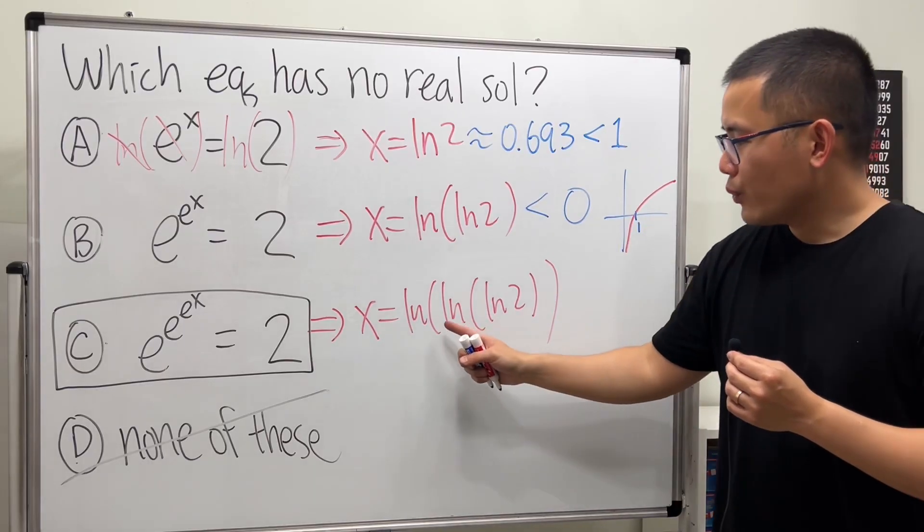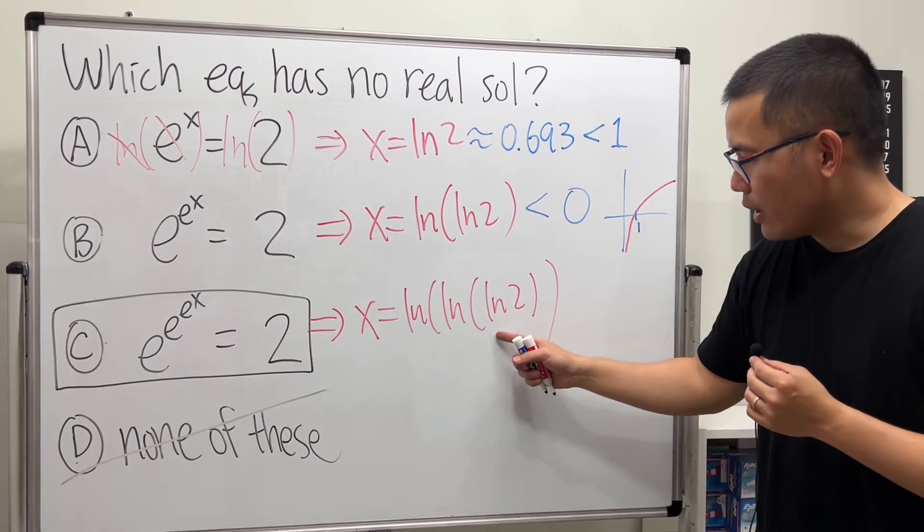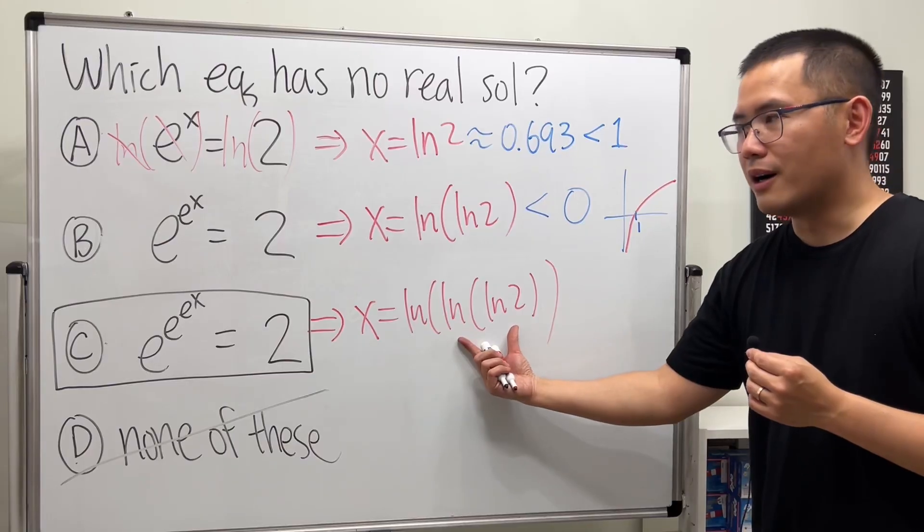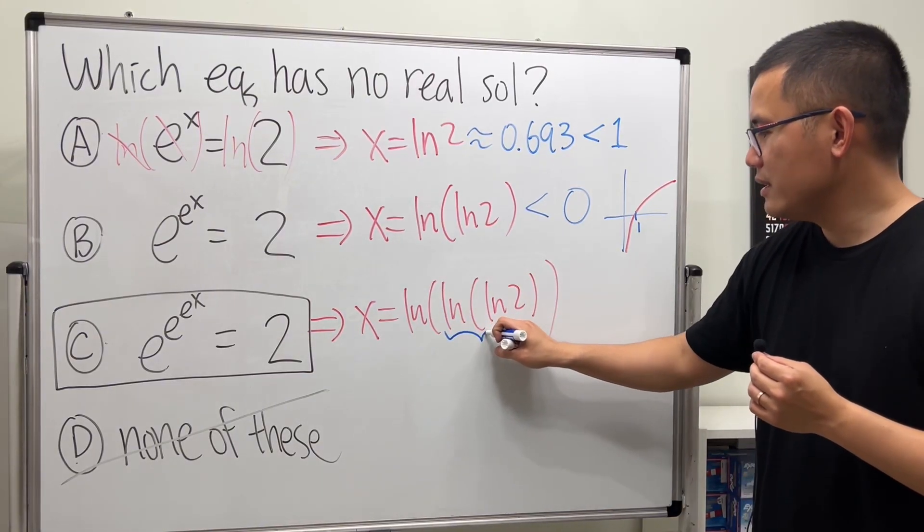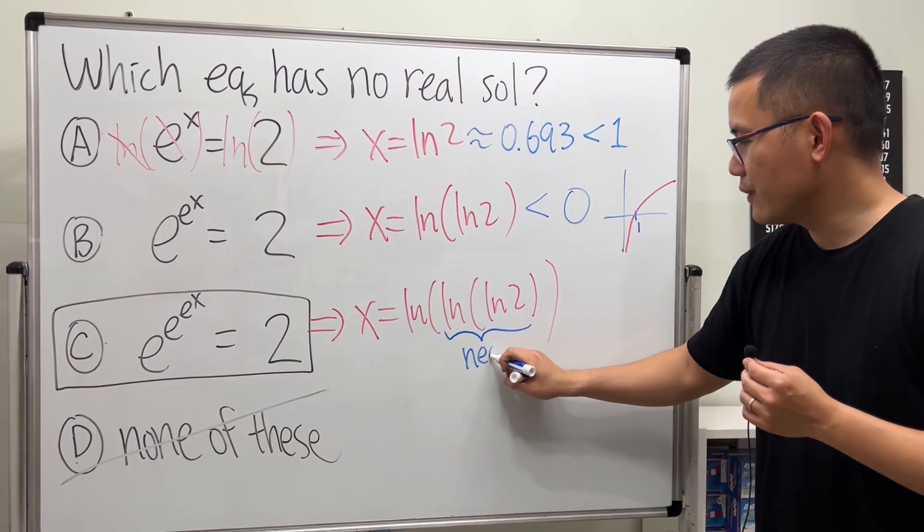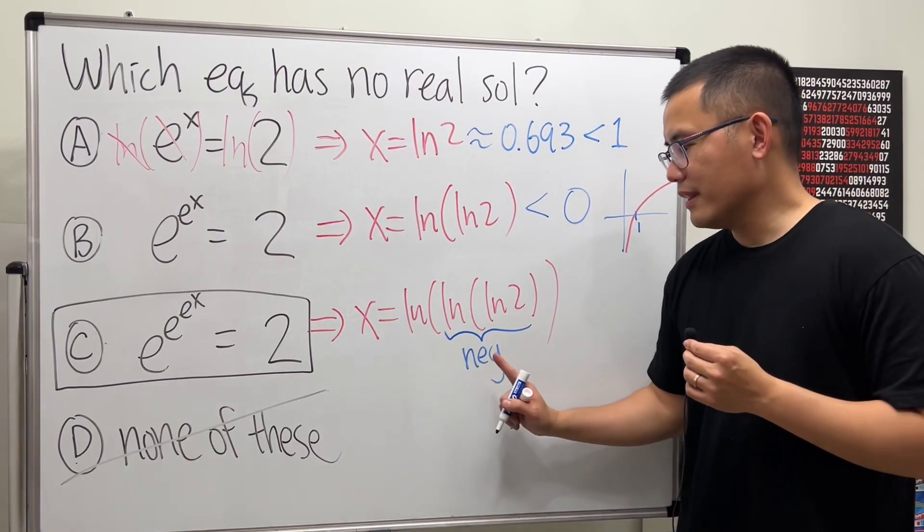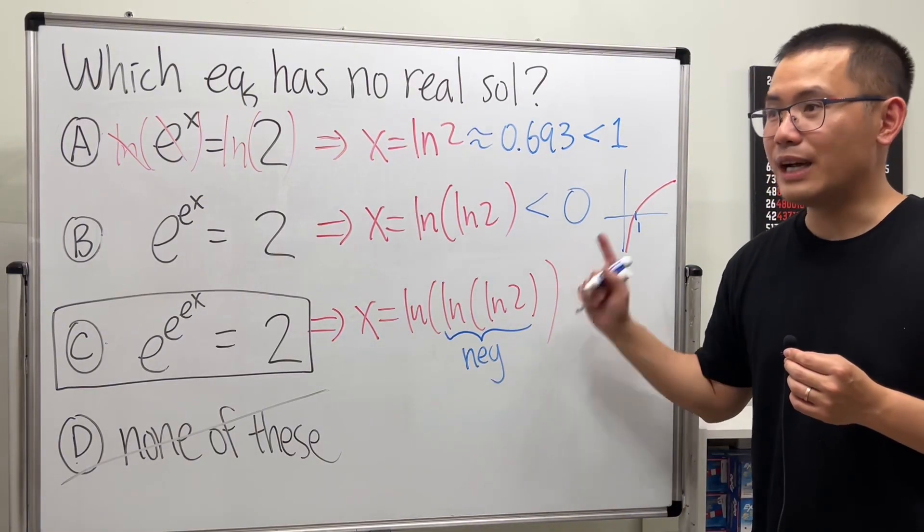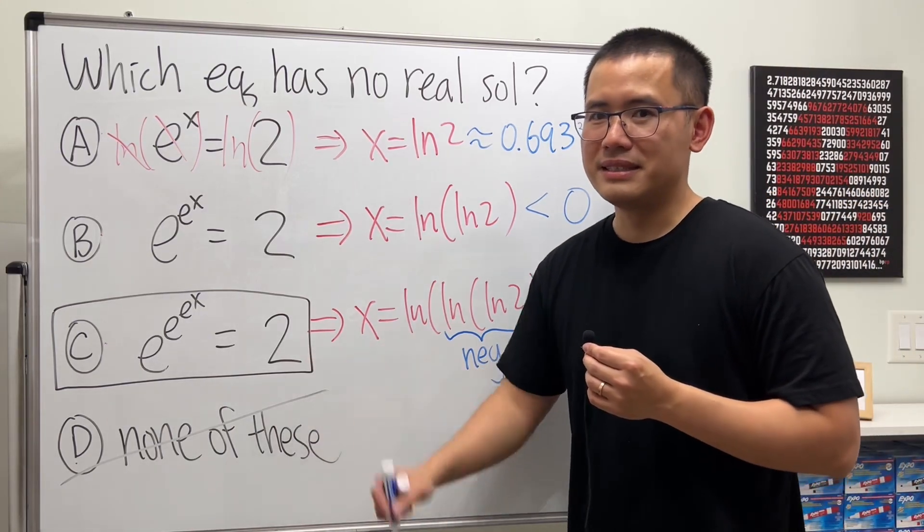Lastly, when we have ln(ln(ln(2))), this part from earlier already, it's already negative. And ln of a negative number, it's not real. That's why the answer is C.